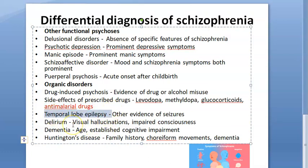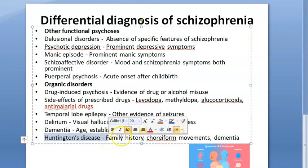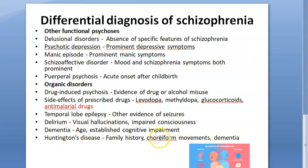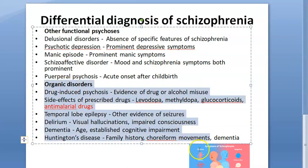Do they have temporal lobe epilepsy causing seizures? Is there delirium, which can lead to visual hallucinations or impaired consciousness? In schizophrenia you can have hallucinations too, so maybe it's just delirium, or dementia due to age, or Huntington's disease where there is degeneration of the brain. You should look for a family history of Huntington's, since it is an autosomal dominant inherited condition. It might also just be substance abuse — all of these organic causes should be ruled out.